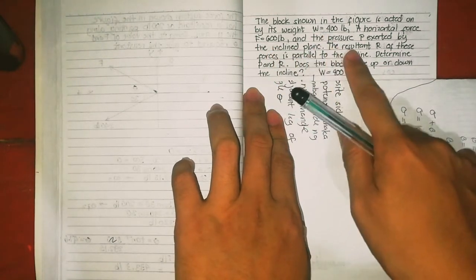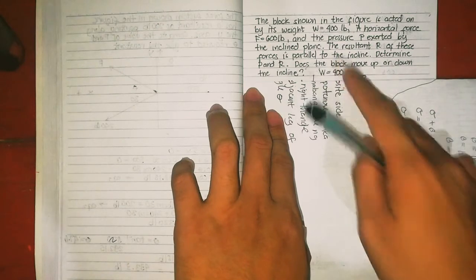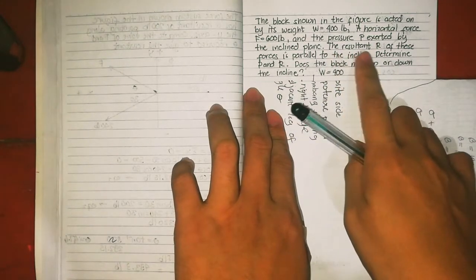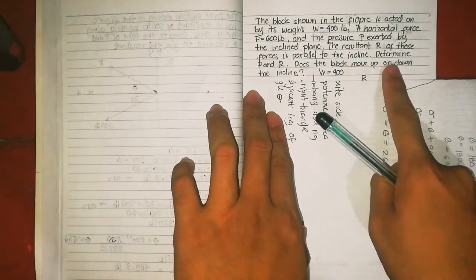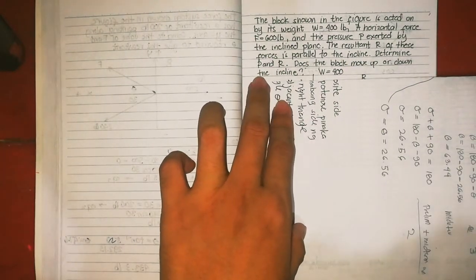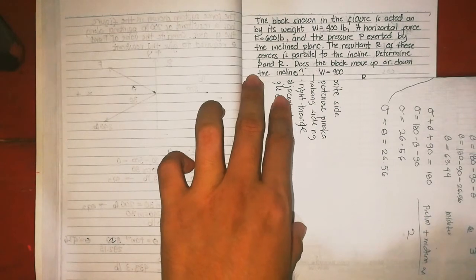The pressure P is exerted by the inclined plane. The resultant R of these forces is parallel to the inclined. How to determine P and R? Does the block move up or down the inclined?